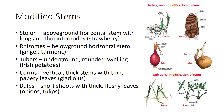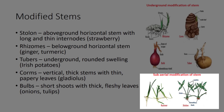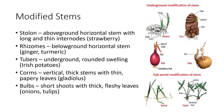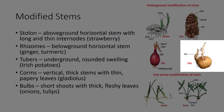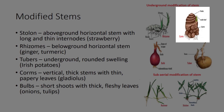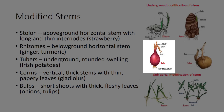In addition to standard stems, there are also modified stems used for storage of reserves and for reproduction. An above-ground horizontal stem with long and thin internodes is a stolon, such as in strawberry runners. A below-ground horizontal stem is a rhizome, such as ginger root or turmeric. A tuber is an underground rounded swelling of a stem, such as Irish potatoes. Corms are vertical, thick stems with thin, papery leaves like gladiolus. Bulbs are short shoots with thick, fleshy leaves like onions and tulips.